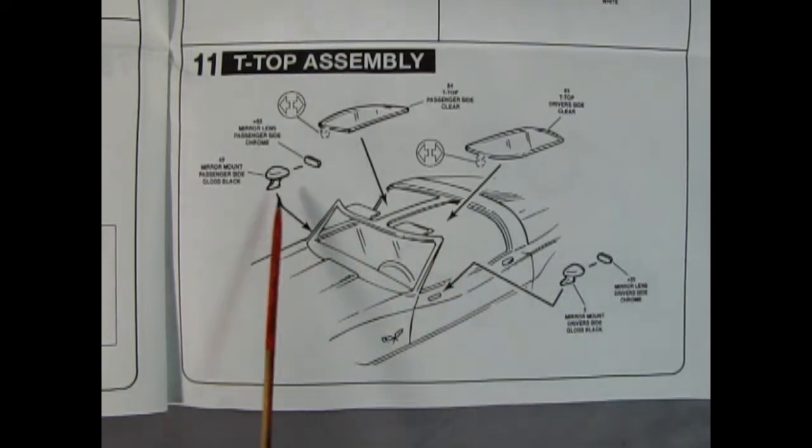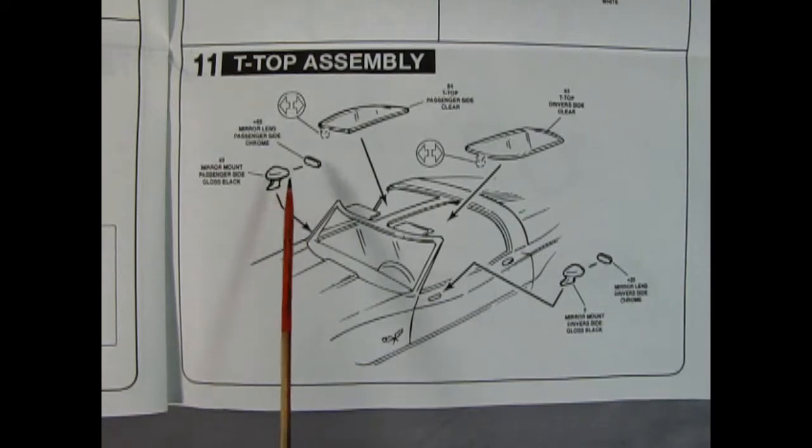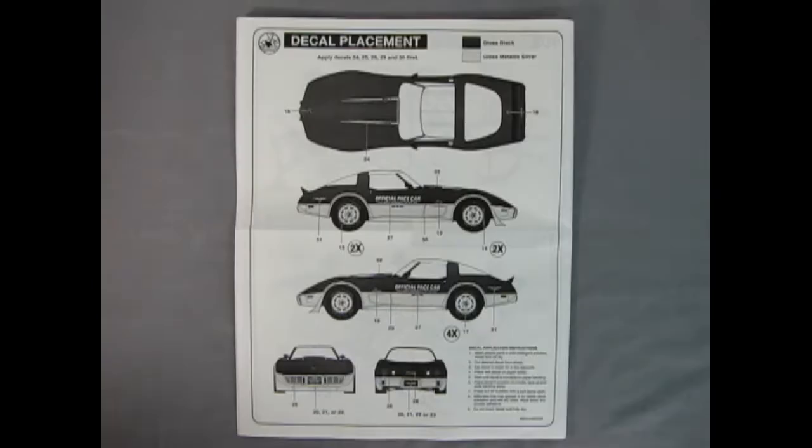There's our two rear view mirror housings and the mirror lenses which glue inside. Our final panel shows our completed model with the decal placement. Now unfortunately I do not have the decals for this kit because it was a secondhand model, but I can always build it as a stock 1978 Corvette.